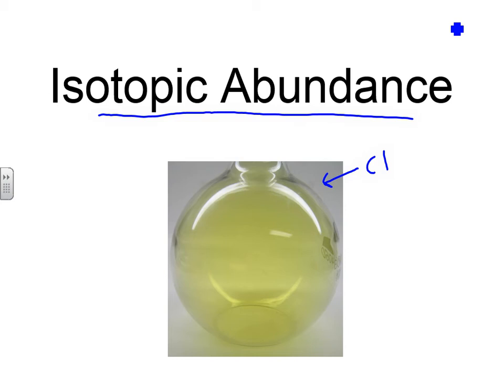For example, in the case of chlorine, there's chlorine-35, and there's also chlorine-37. Both of these isotopes are present in the bottle, and we will talk about this idea in this lesson.